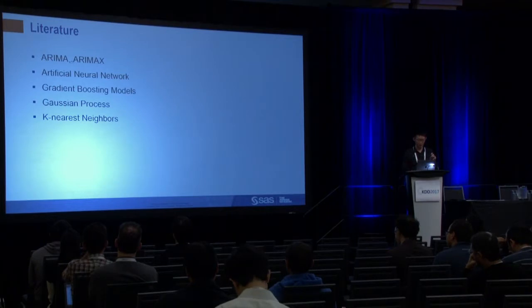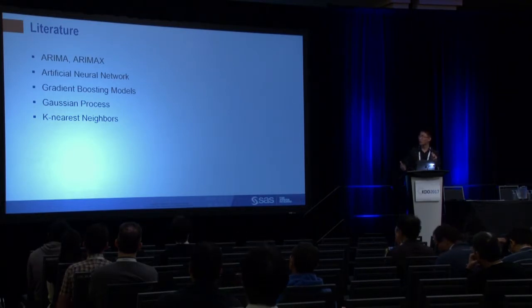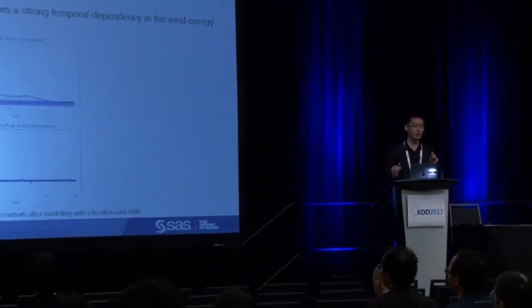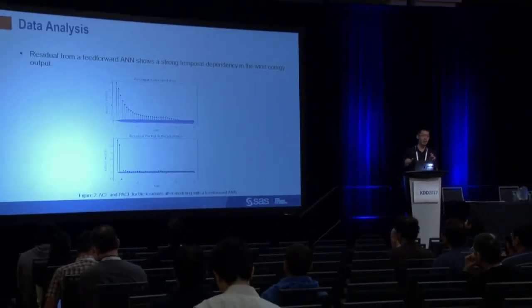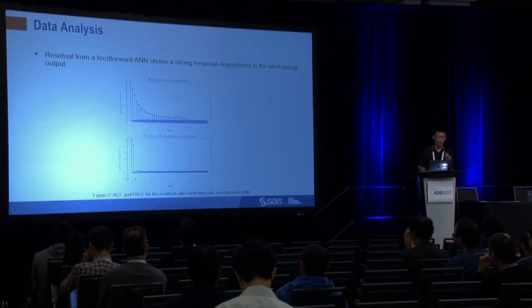Previously, people would use ARIMA or ARIMAX — time series focused methods — or machine learning methods based on regression assuming temporal independence. For example, if we assume temporal independence and feed a feedforward neural network, the residual autocorrelation and partial autocorrelation still show temporal dependencies even after engineering time-related covariates. So those dependencies cannot be removed simply by feature engineering.